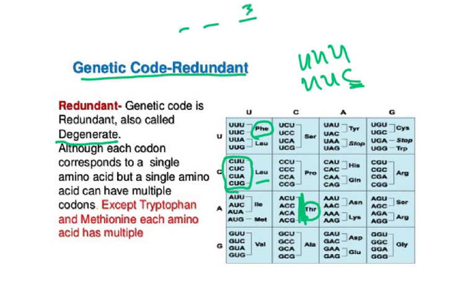Look at ACU, ACC, ACA, and ACG — they all code for the same amino acid, so even if a mutation occurs and a base changes, it's still not going to result in the primary structure of the protein being affected. The primary structure is the number and sequence of amino acids.